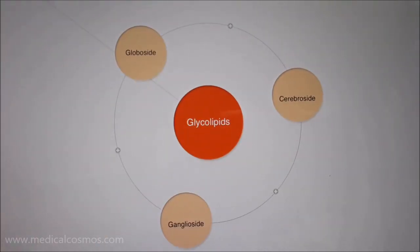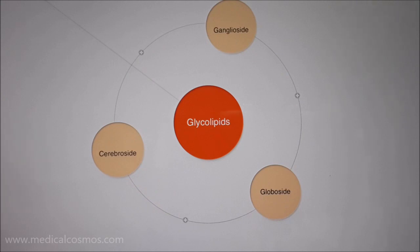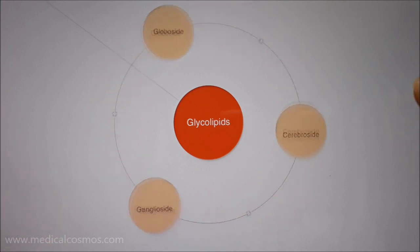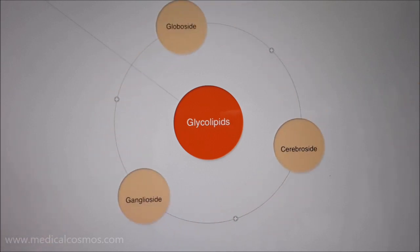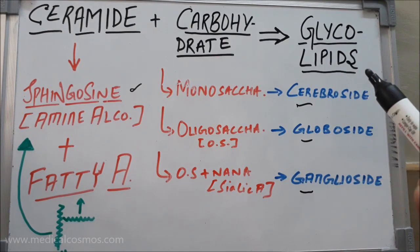Glycolipids have three categories, and you would have heard of them in the context of many enzymatic deficiency diseases — that's why it's important to know their biochemistry. The three categories are cerebroside, globoside, and ganglioside. Now let us look into the biochemistry overview of the glycolipids.